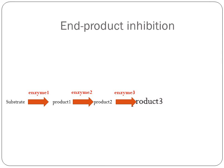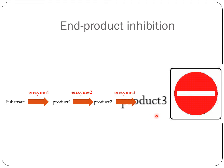When product 3 increases, this might lead to lethal effects on the body, because the end product — product 3 — can be toxic if its level exceeds certain thresholds. That's why metabolic reactions inside the body must not go uncontrolled. If these reactions run in an uncontrolled fashion, product 3 will keep increasing, leading to negative effects on the body.